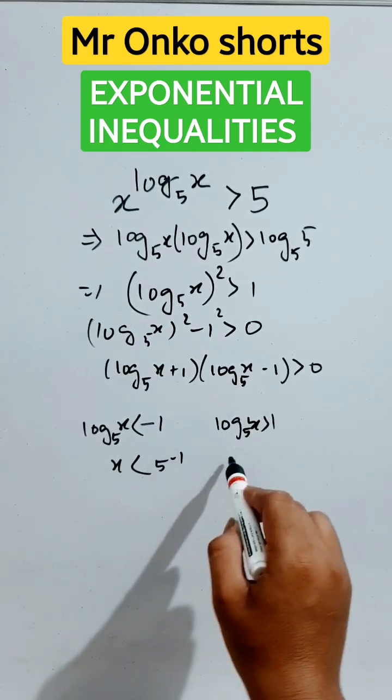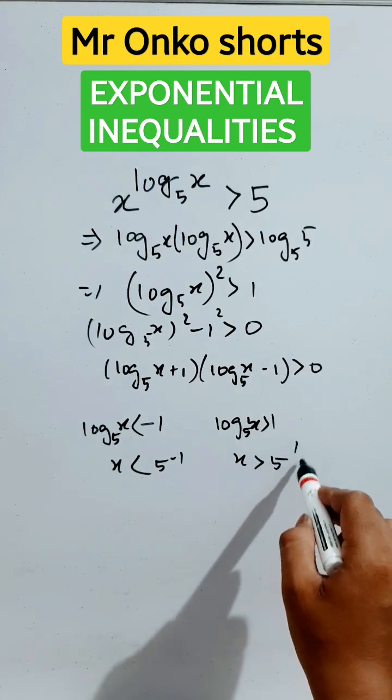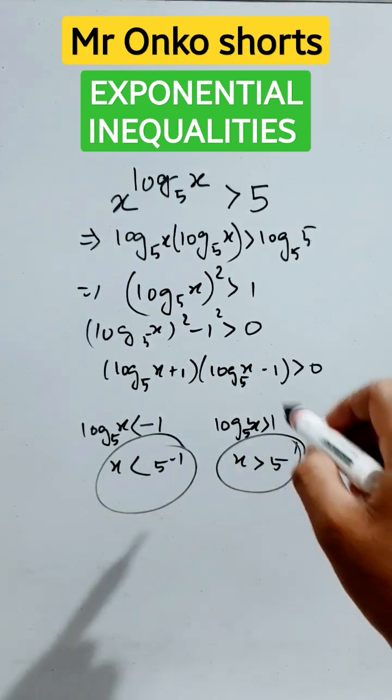x is less than 5 raised to the power of minus 1, x is greater than 5 raised to the power of 1. That is, these are the values.